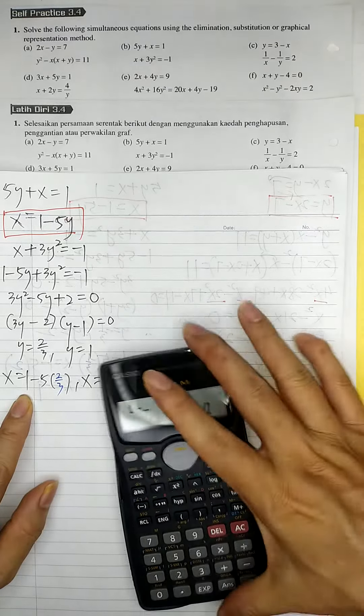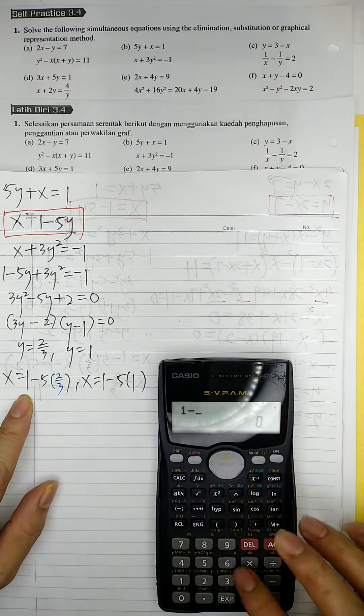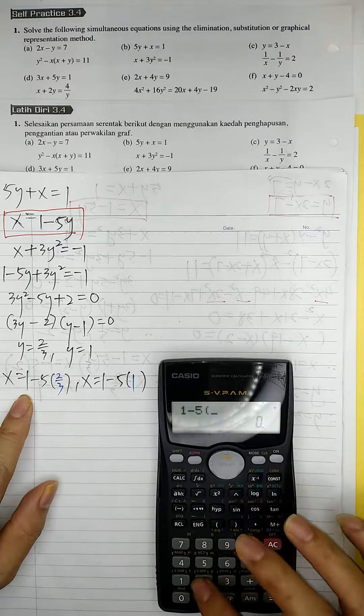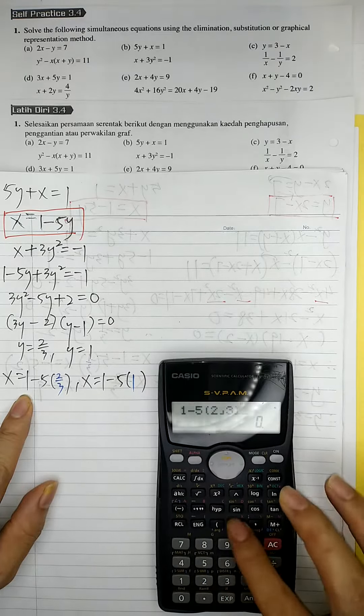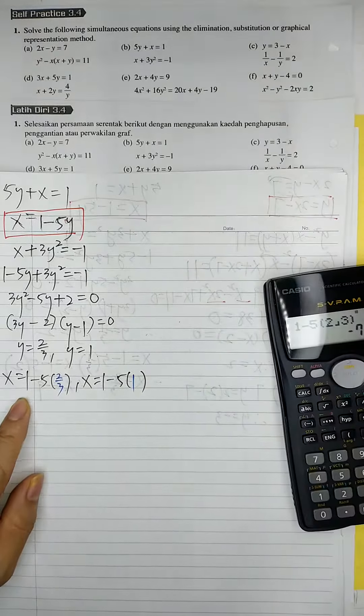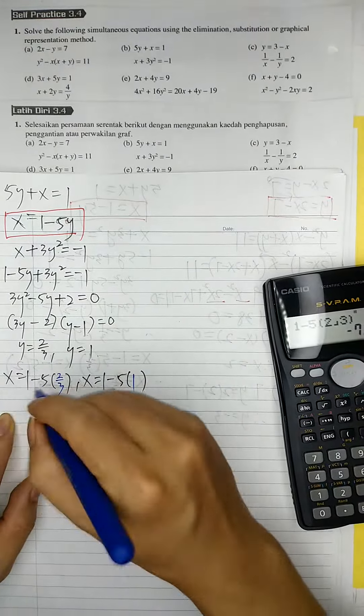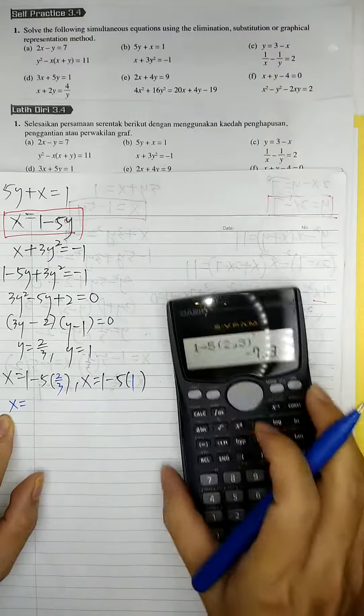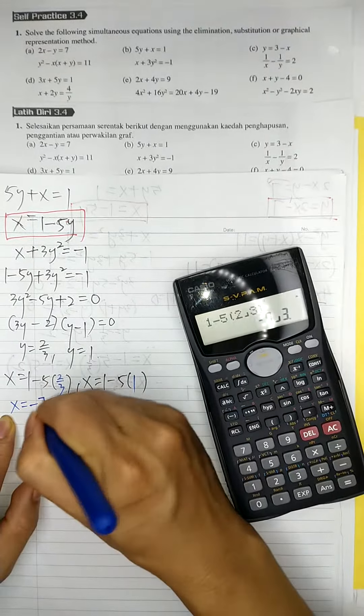1 minus 5 times 2 over 3. Shift ABC gives negative 7 over 3. So x equal to negative 7 over 3.